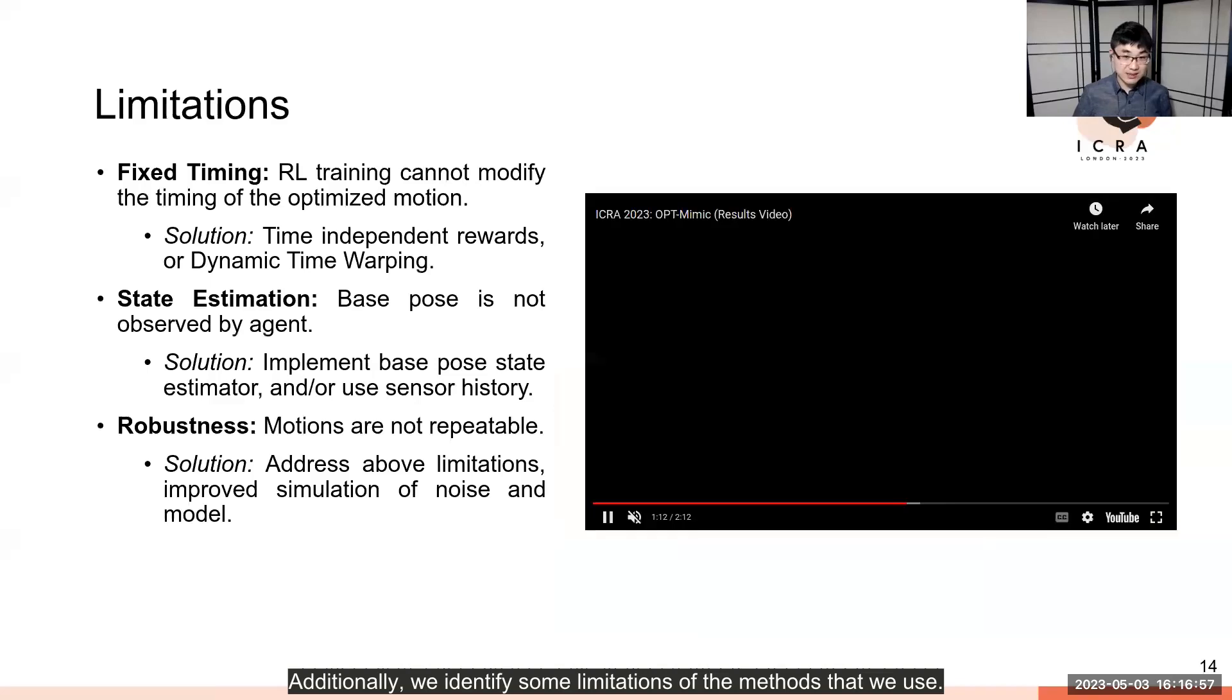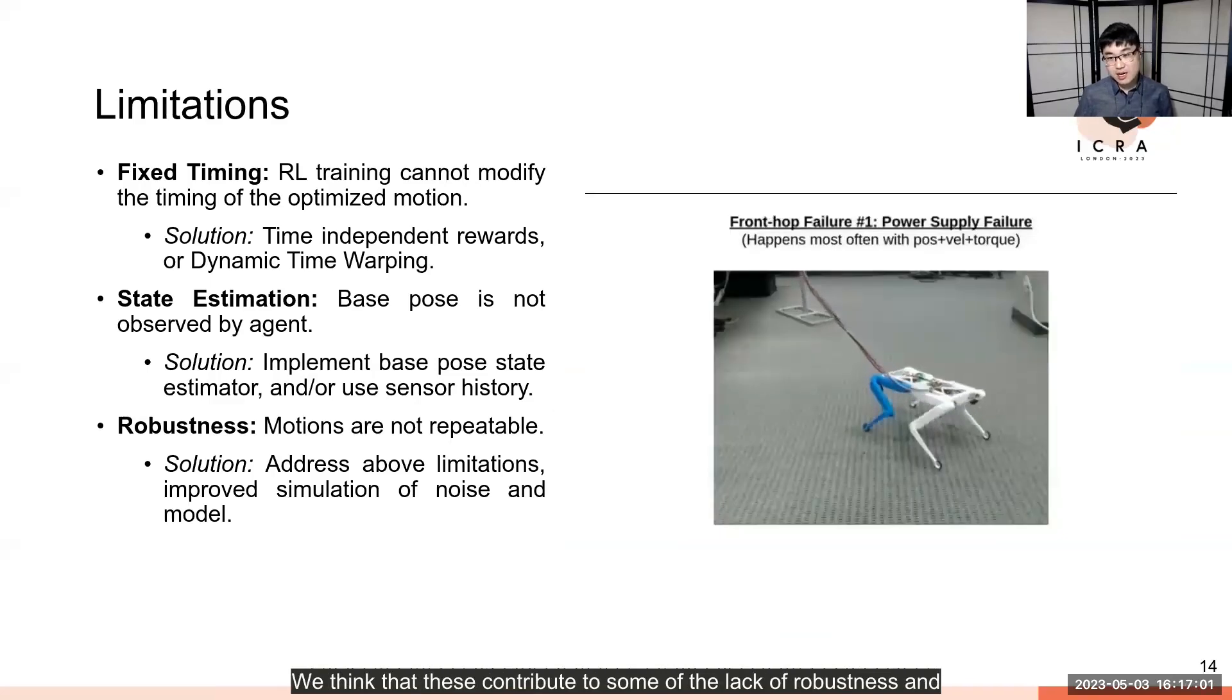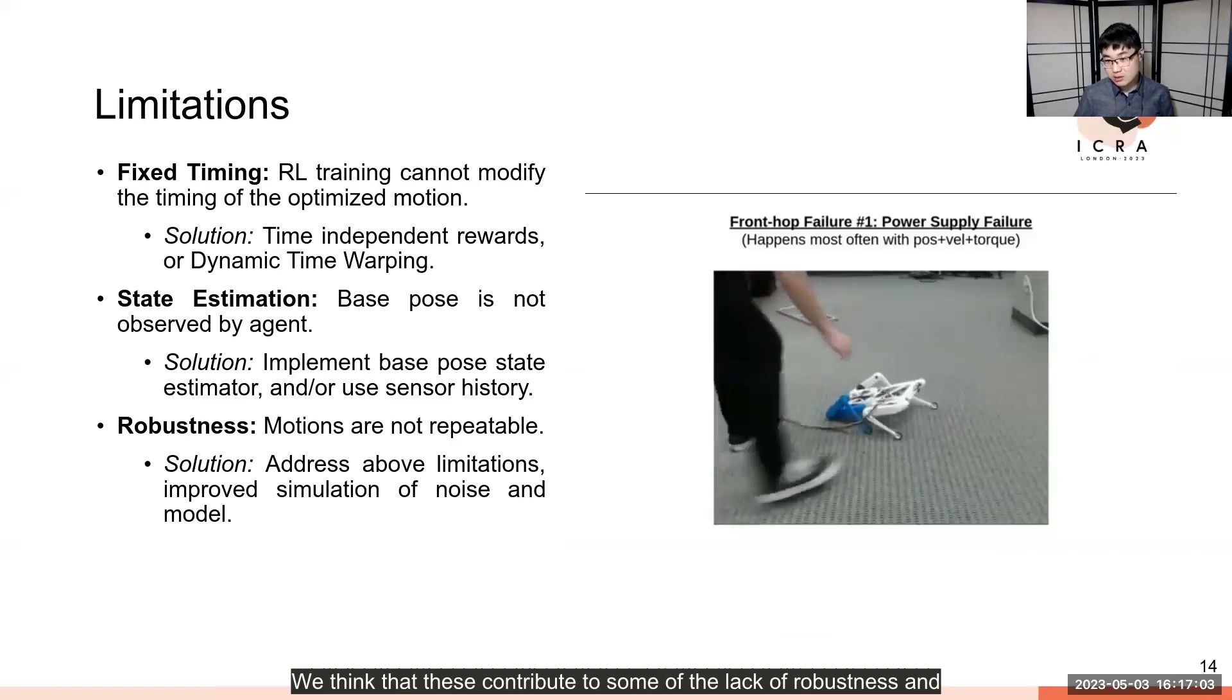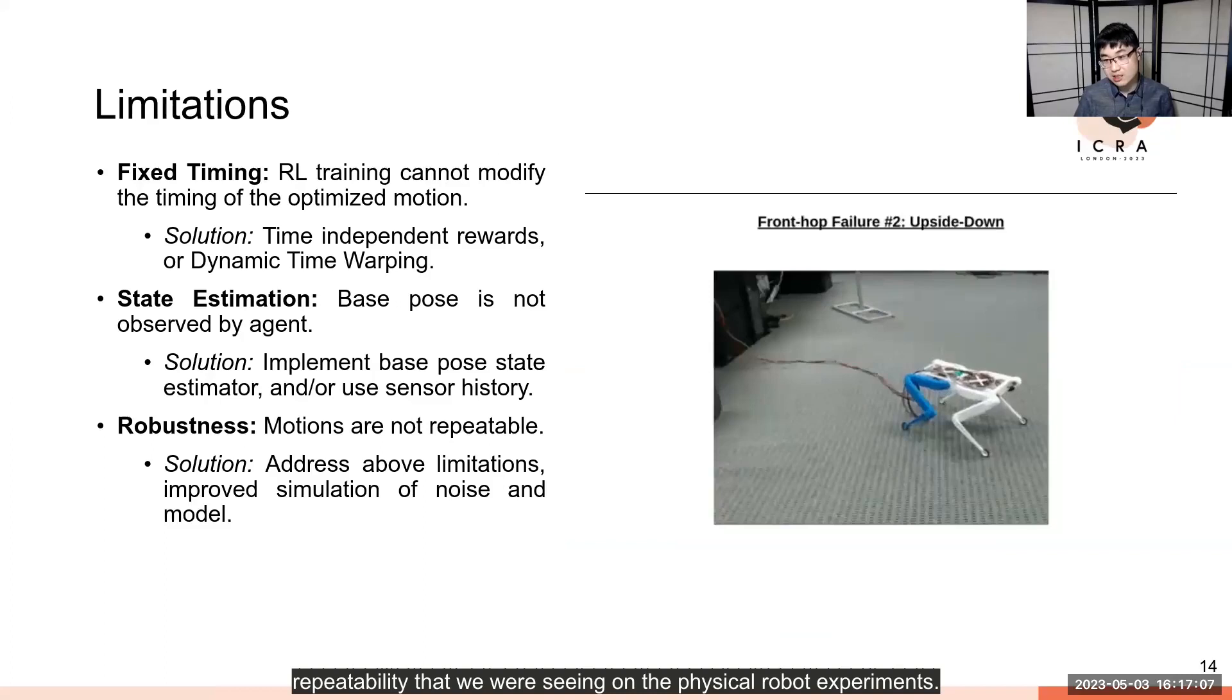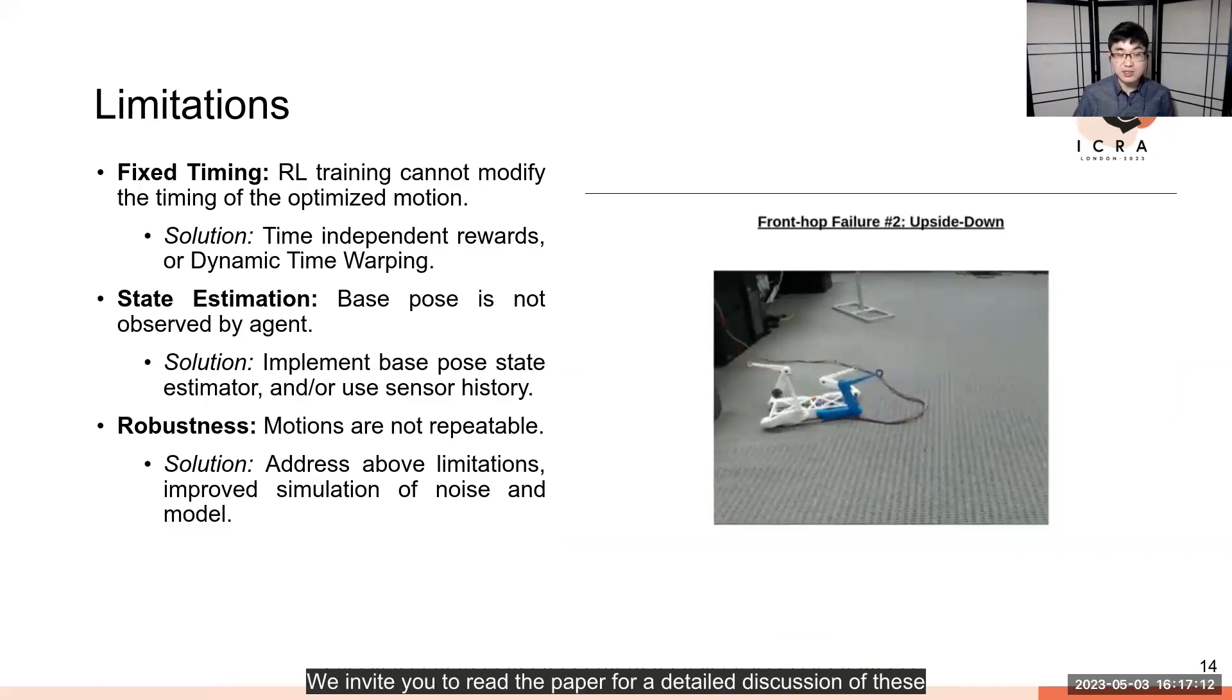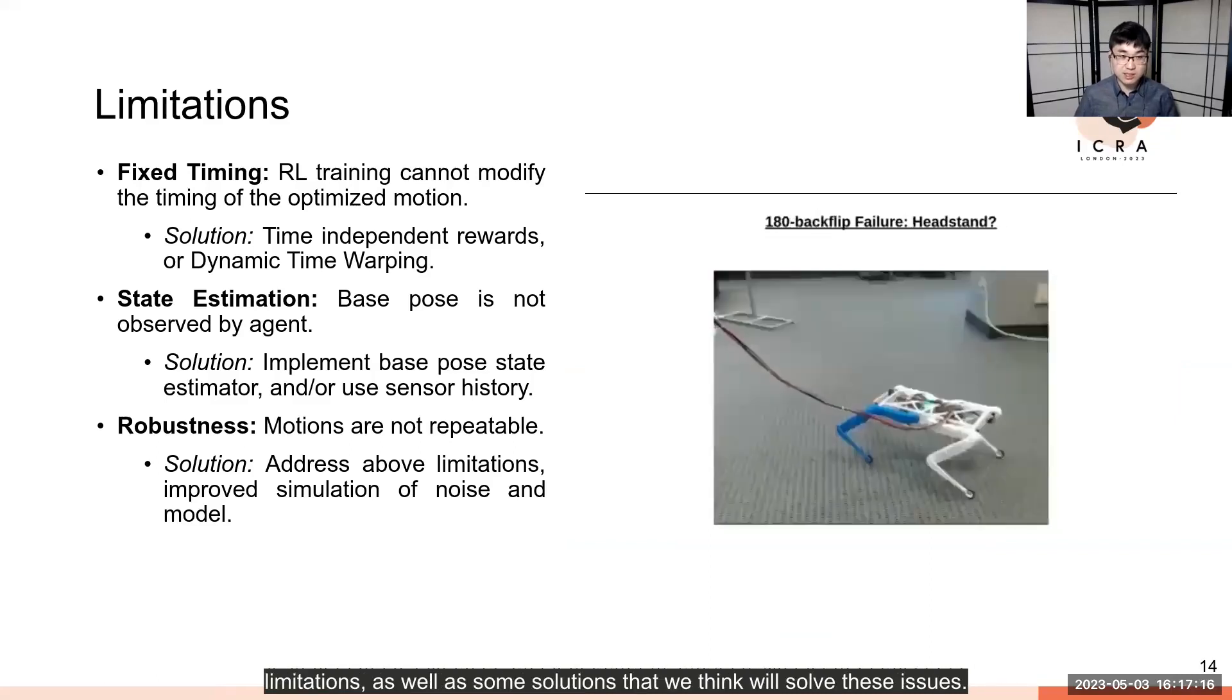Additionally, we identified some limitations of the methods that we use. We think that these contribute to some of the lack of robustness and repeatability that we were seeing on the physical robot experiments. We invite you to read the paper for a detailed discussion of these limitations as well as some solutions that we think will solve these issues.